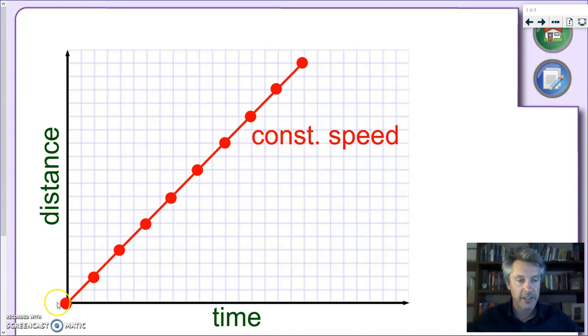For instance, in the case that is depicted here, every two squares of time, we have two squares of distance. And then, in the next unit of time, and so on and so forth. And if you connect these dots, you will see that you get a very specific pattern, what we call a straight line.